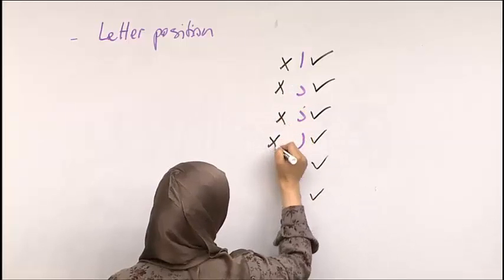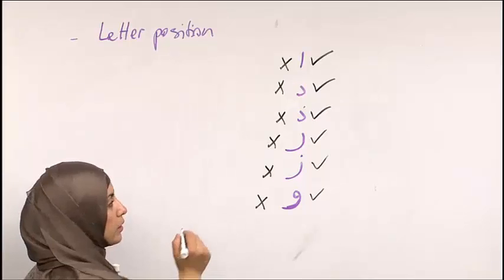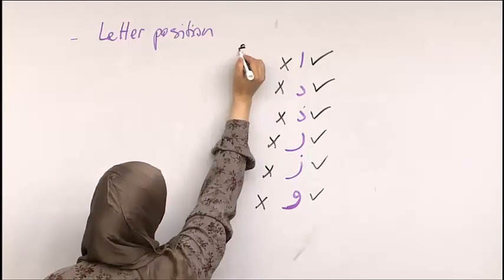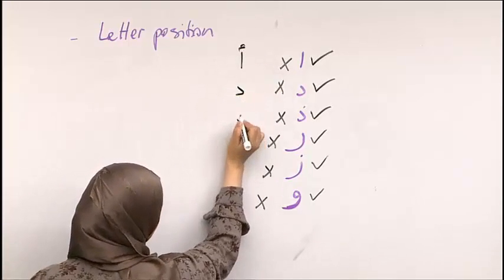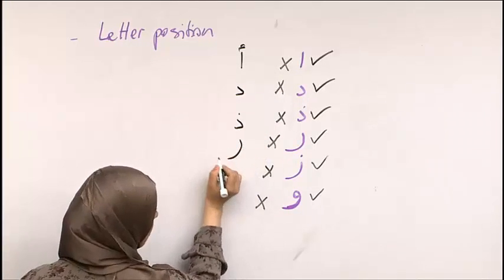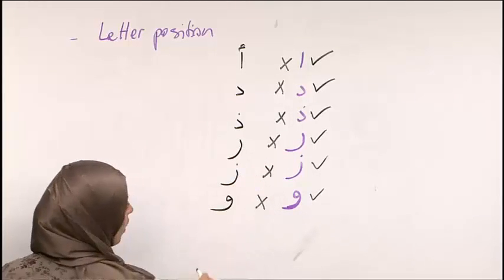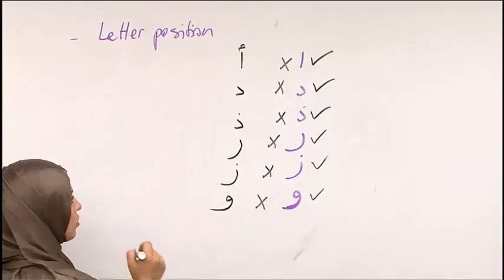If I'm writing alif initial form, how am I going to write it? Just like that, just as the isolated form. Ra, zayn, and waw, they keep the same form in the initial position.